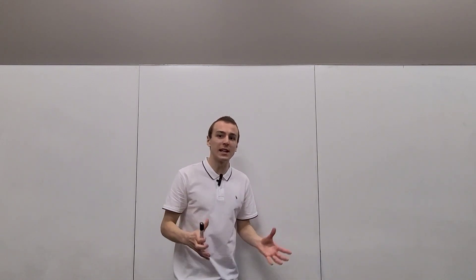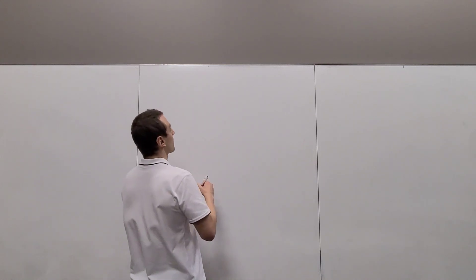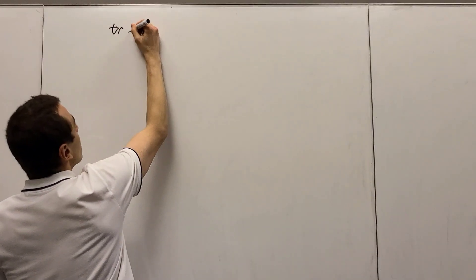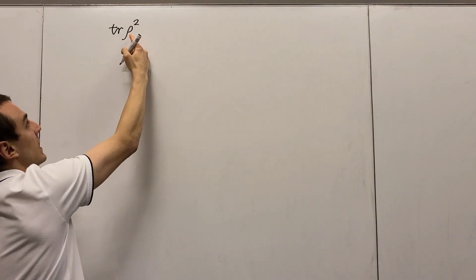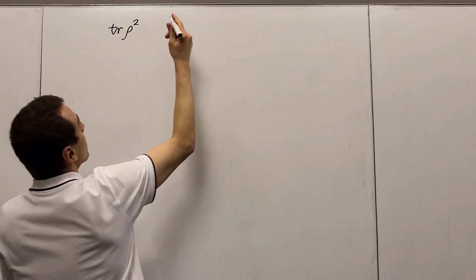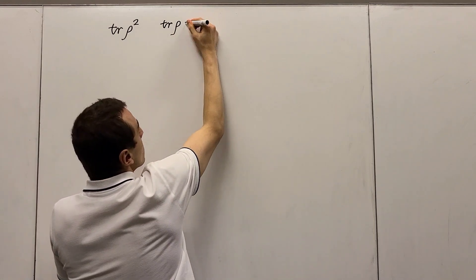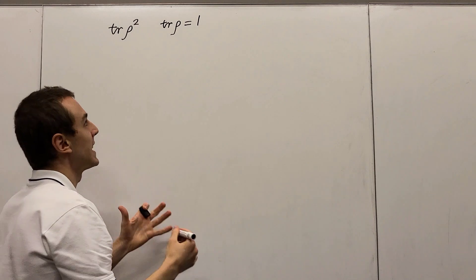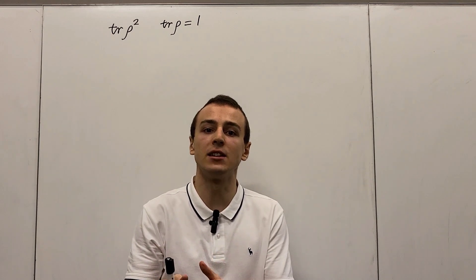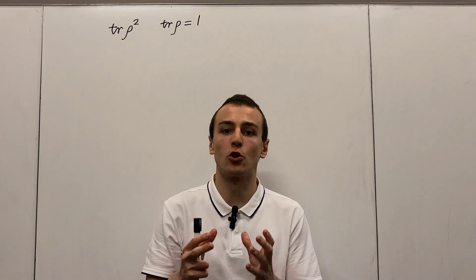First, let's write down a general statement about the density matrix for a qubit state. Let's write down the quantity known as the purity — this is the trace of rho squared, where rho is the density operator or density matrix. Let's link this to the trace of rho, which is equal to one — that is the normalization condition. It is just like taking the state and then taking the inner product of the state with itself, so we define that to be equal to one because we want the state to be normalized.